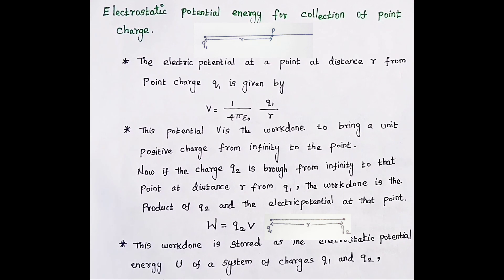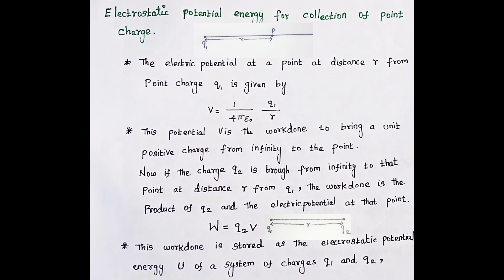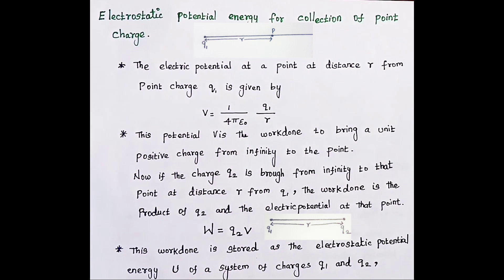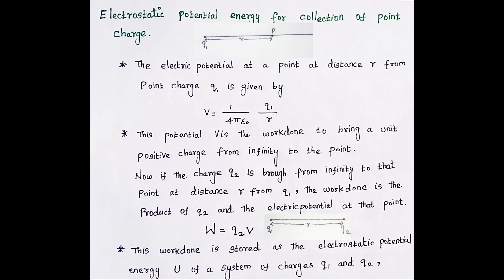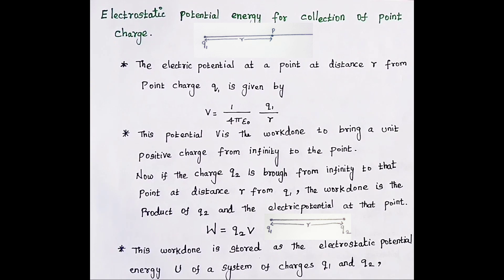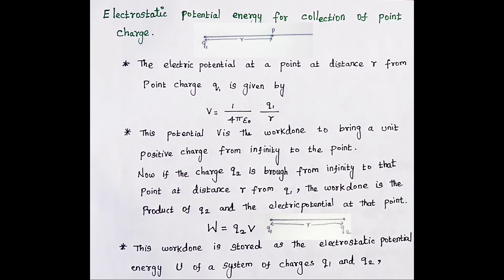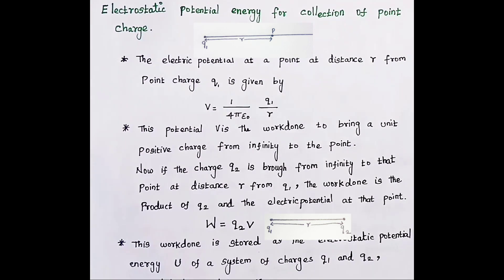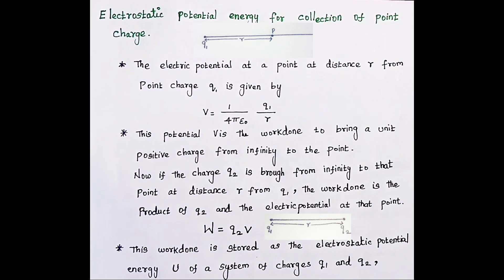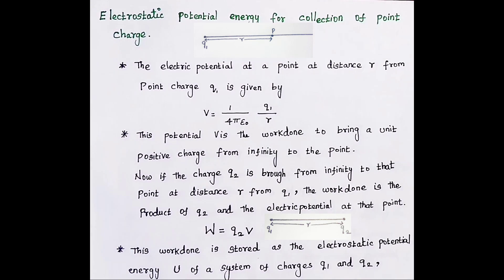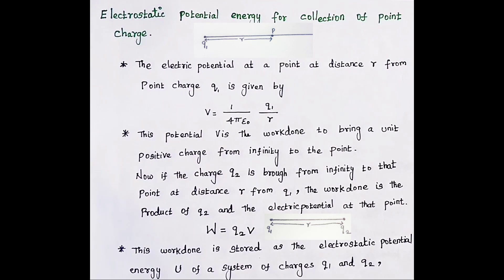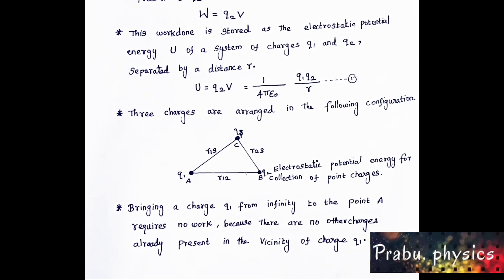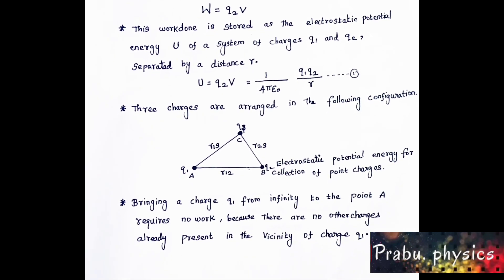When q2 is brought near q1, work must be done because q1 is an electric charge that produces an electric field around it. So in the presence of that electric field, to fix the charge q2 in position, work must be done. That work W = q2 × V, and this work done is stored as the electrostatic potential energy U of the system of charges.